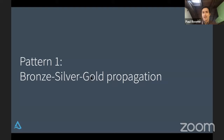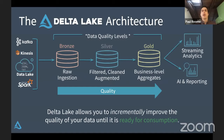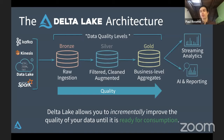The first pattern we're going to look at is the so-called bronze, silver, gold propagation — the medallion architecture. Different areas of your lake are separated for different qualities of data. Your bronze area is where you collect raw data coming in from its source. Perhaps you've got events coming into Kafka and you write them into a Delta Lake table, just appending onto the bottom. You don't want to perform any cleaning here — you want to capture data in its purest form so no mistakes can creep in.